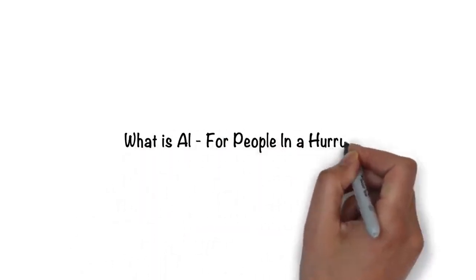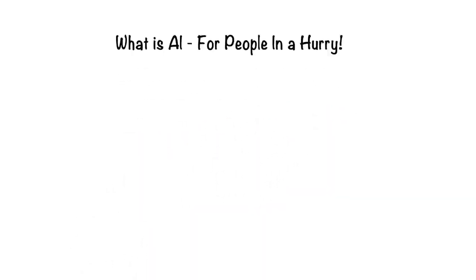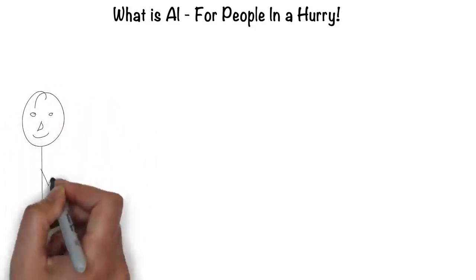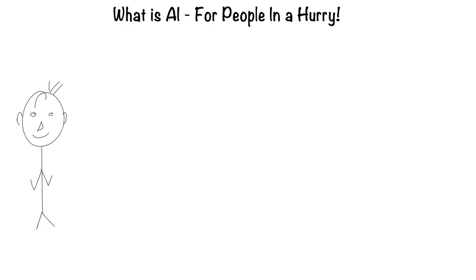Artificial intelligence for people in a hurry. The easiest way to think about artificial intelligence is in the context of a human. After all, humans are the most intelligent creatures we know of.